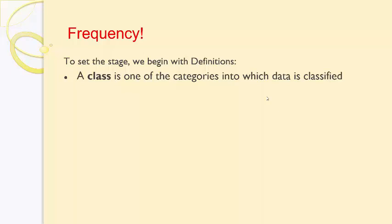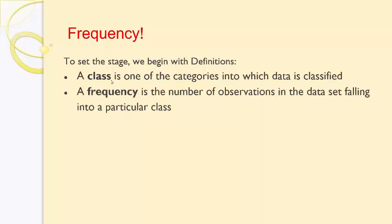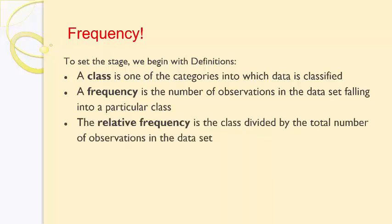We're going to take our data and divide them up into categories. This is what's called a class — a class is one of the categories into which data is classified. For example, if we divide our class by freshman and sophomore, those are the classes. Next is the concept of frequency: a frequency is the number of observations in the data set falling into one of these particular classes. Think of frequency as simply the count.